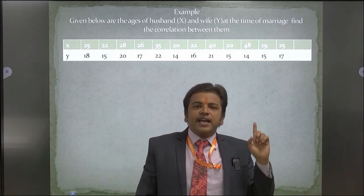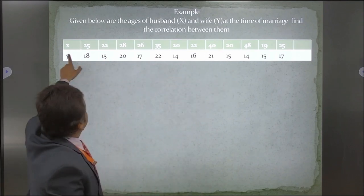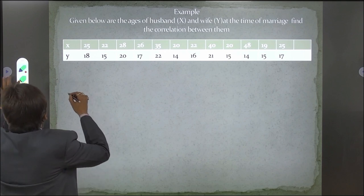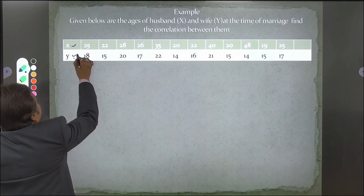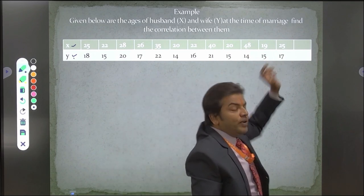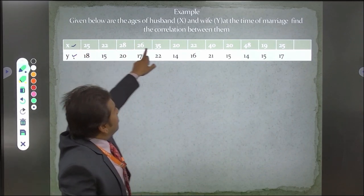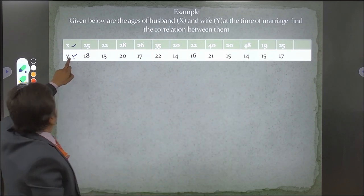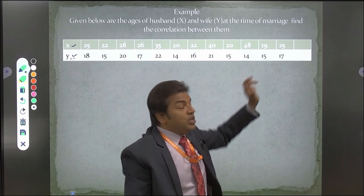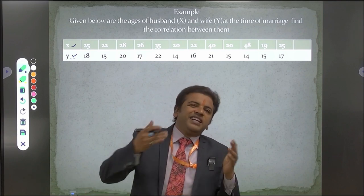Given below are the ages of husband X and wife Y at the time of marriage — find the correlation between them. Two series are given: X series for husband and Y series for wife. The ages of husbands are: 25, 22, 28, 26, 35, 20, 22, 40, 20, 48, 19, 25. These are the ages at the time of marriage. Similarly, ages of wives are given. We need to determine whether these two data series are positively or negatively correlated.